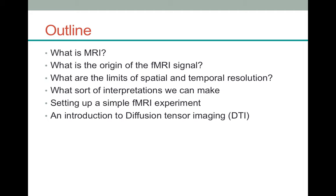The main points I would like you to consider in this lecture are: what MRI is and what it is measuring, including the principles behind the images we obtain. I would like you to challenge your assumptions about MRI. We will cover what the limitations of MRI are, what interpretations we can make from the signal we receive, and how to set up a basic fMRI experiment. Finally, we will briefly cover an introduction to diffusion tensor imaging.